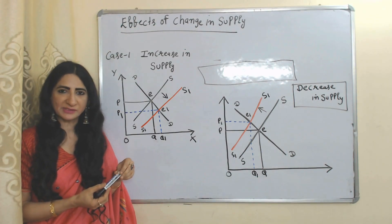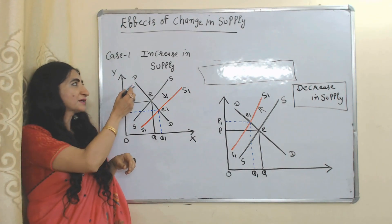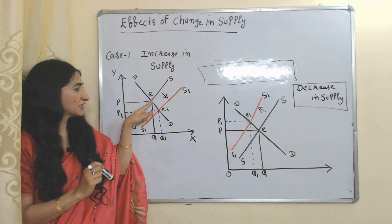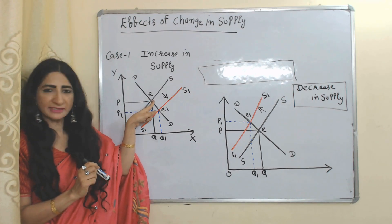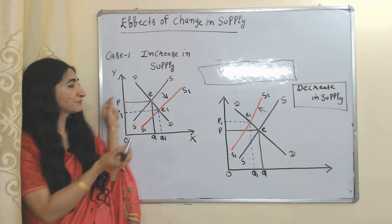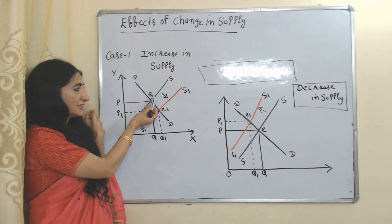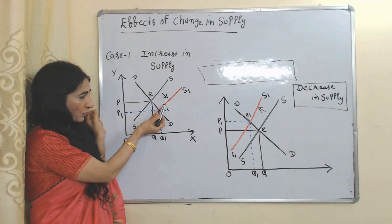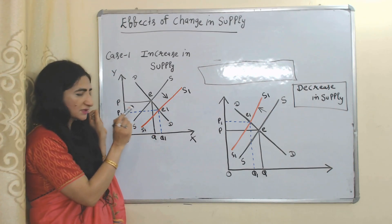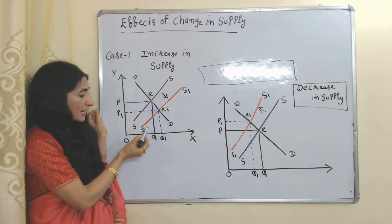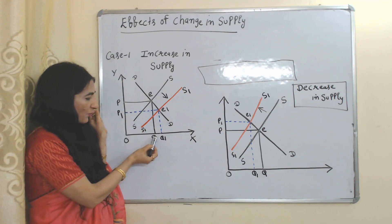Now we will see the effects of change in supply. First case: increase in supply. Our initial equilibrium point is E. Now suppose demand is constant. Due to increase in supply, the supply curve shifts forward. S1S1 is the new supply curve. E1 is the new equilibrium point. At this equilibrium point, quantities have increased from Q to Q1 due to the increase in supply.